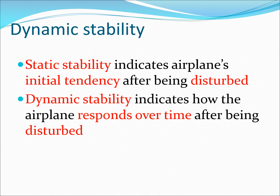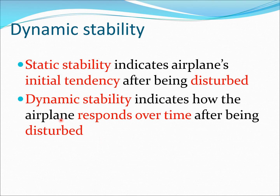Beside the concept of static stability, there is a very important concept of dynamic stability. The previous examples showed that static stability indicates the airplane's initial tendency to come back after being disturbed — the word initial tendency is key, and static stability is essentially based on that. Dynamic stability, by contrast, indicates how the airplane will behave over a period of time after it is disturbed. This is more of a time-dependent response of the system.